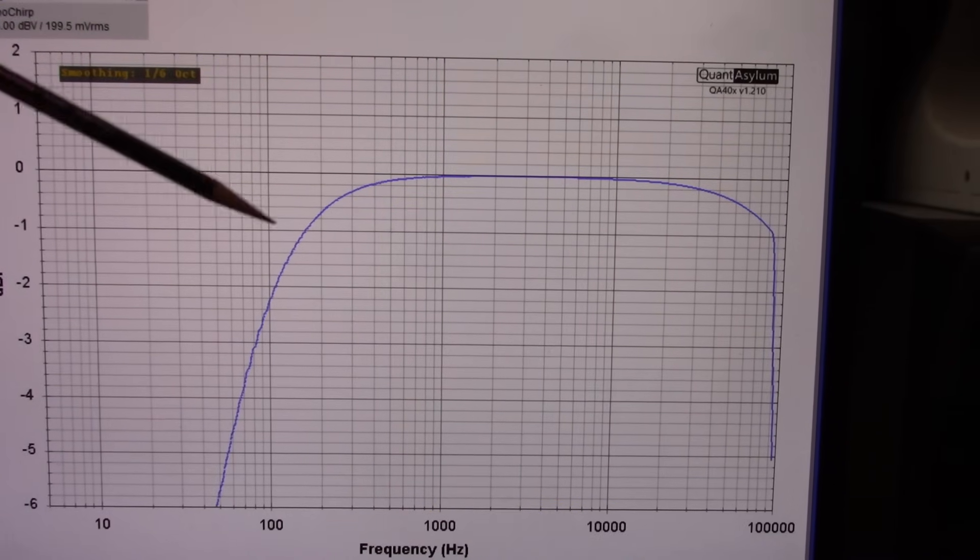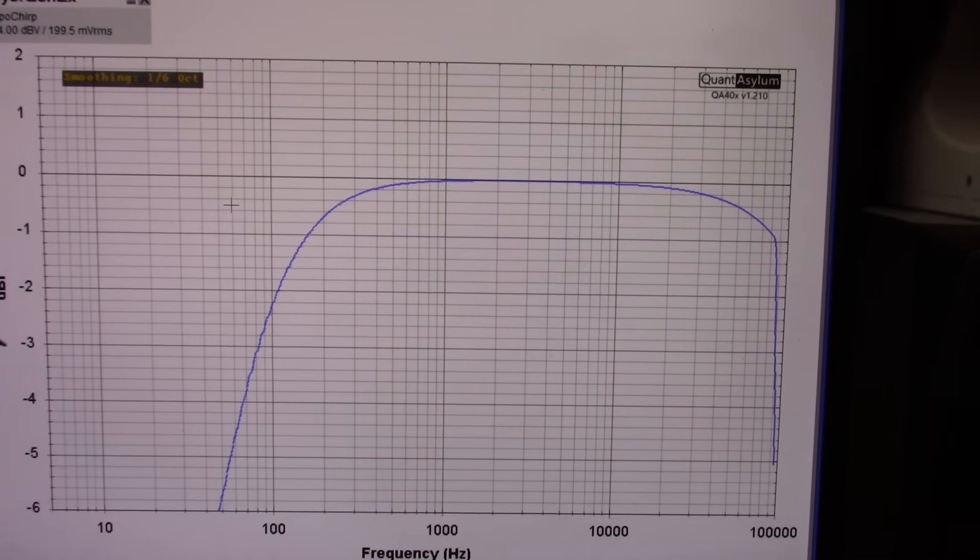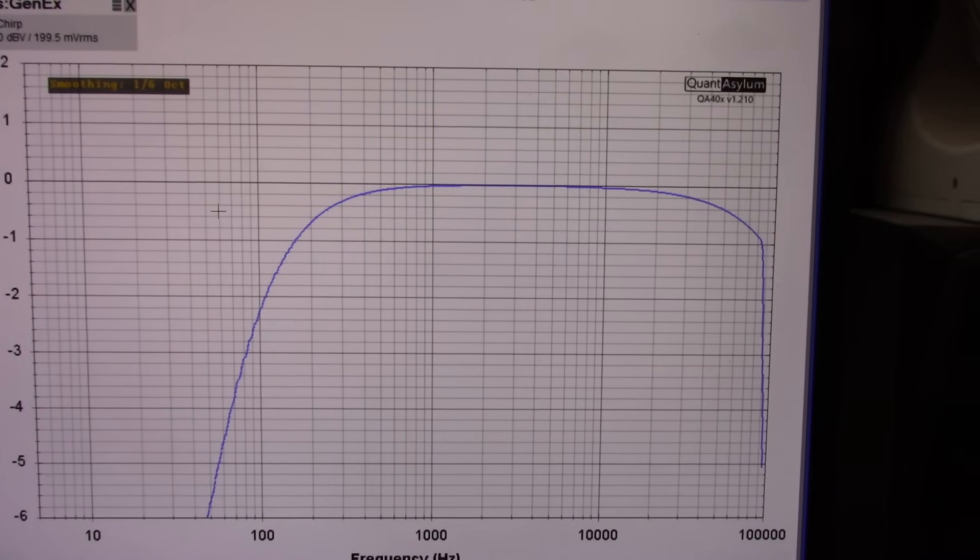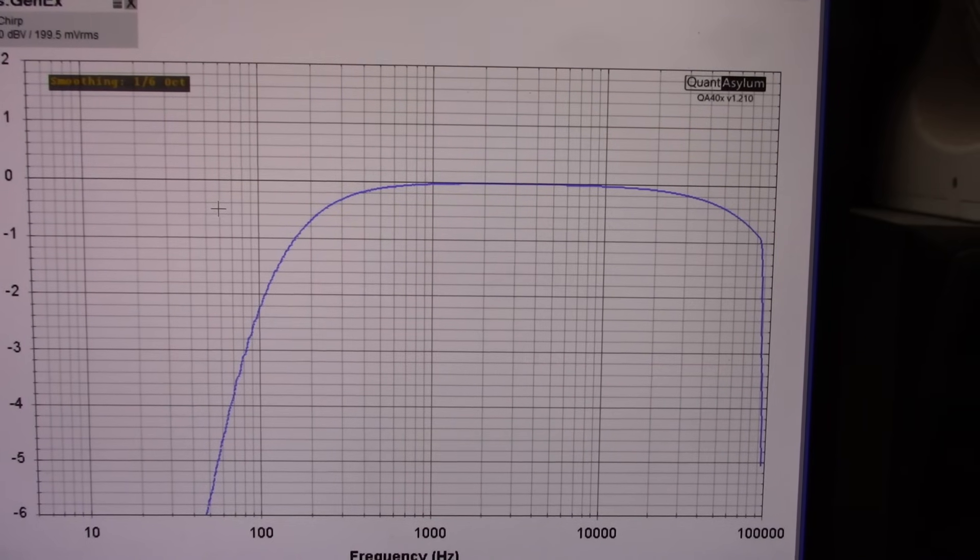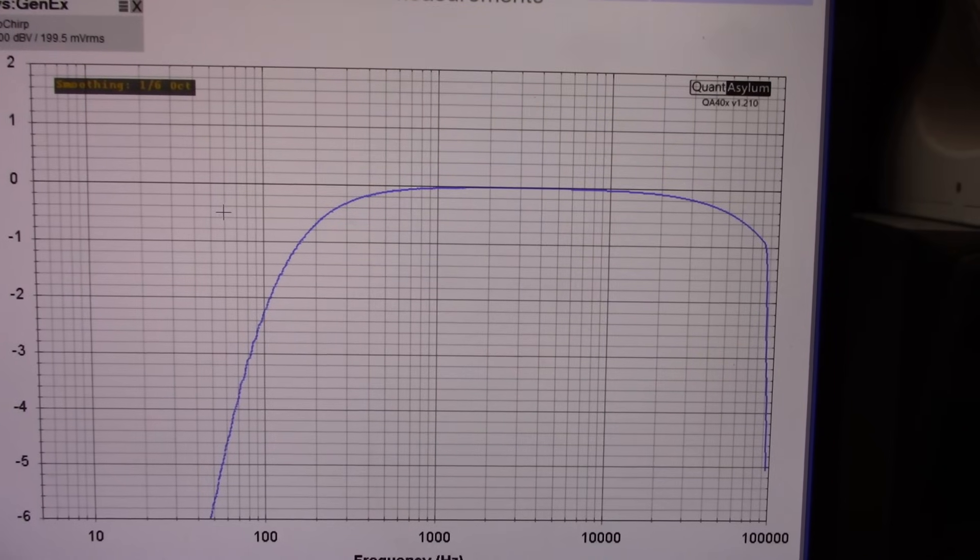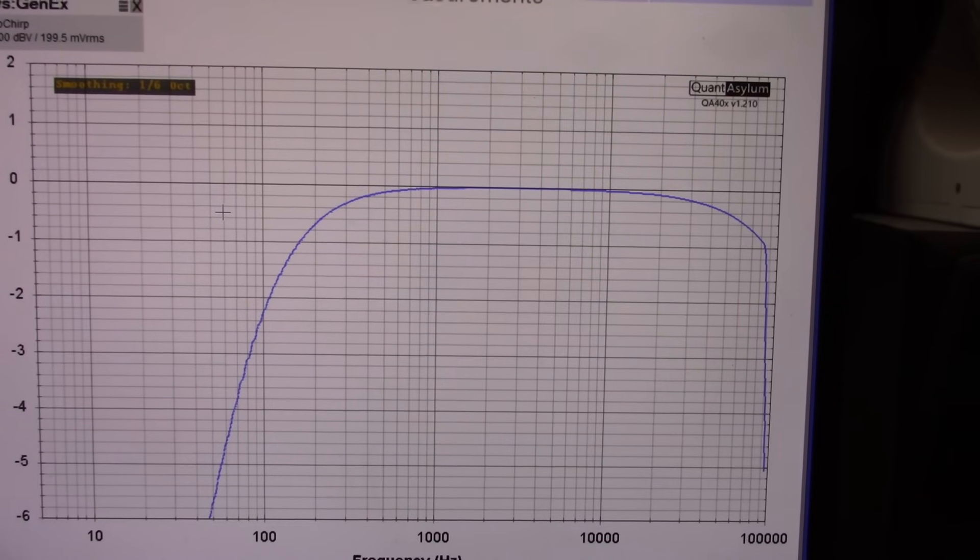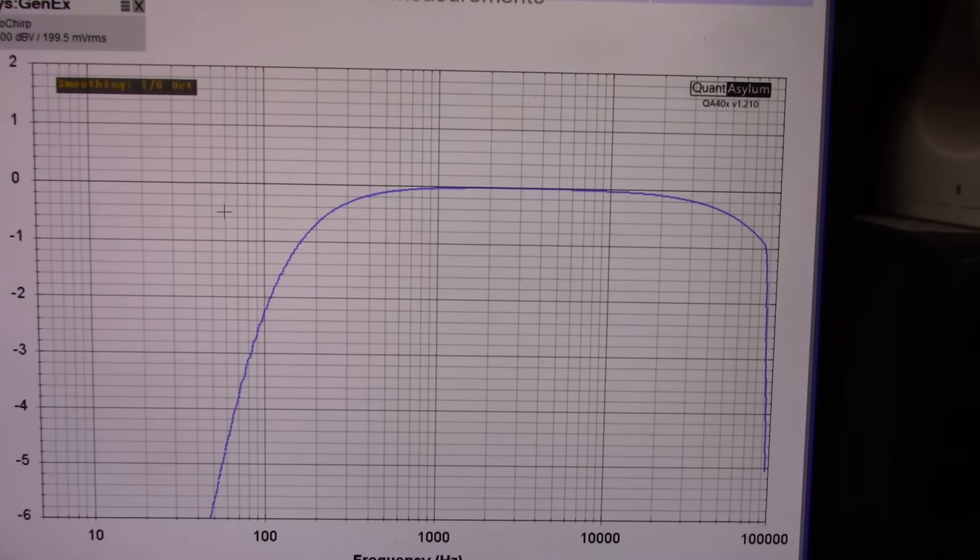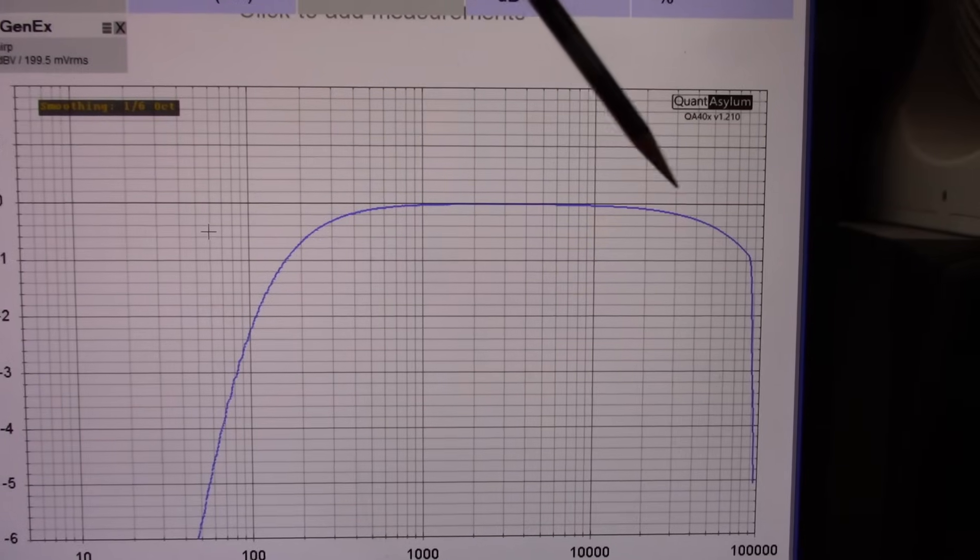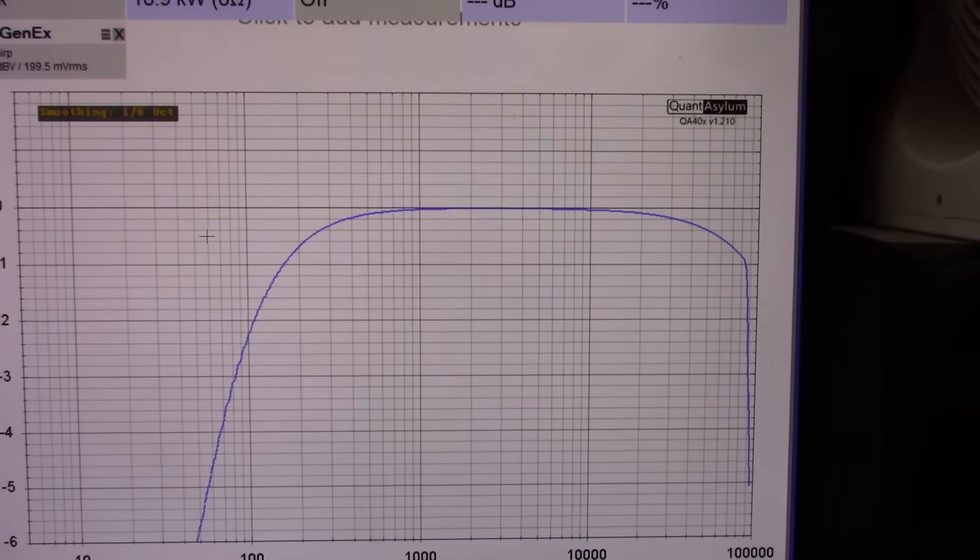And not so hot, is it? Rolling off 3 dB down at 80 hertz, which is really totally unacceptable. And that's due to the output capacitor. It's just not the right value. The output and input capacitor value should be evaluated and increased in this circuit. And it doesn't really affect the high end, of course.